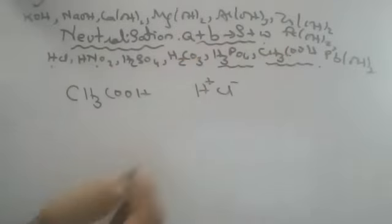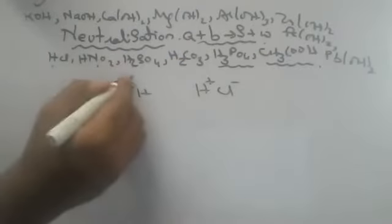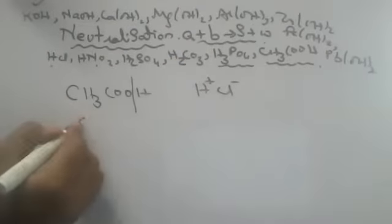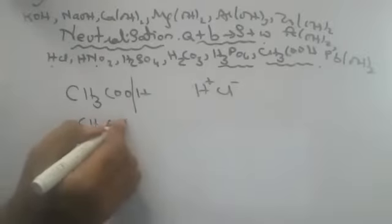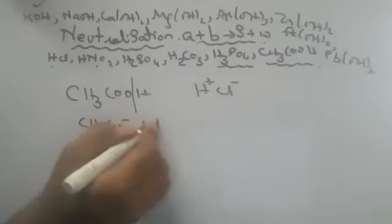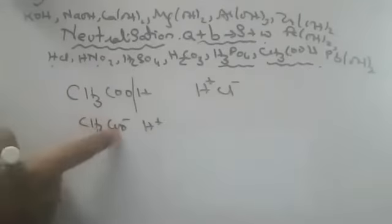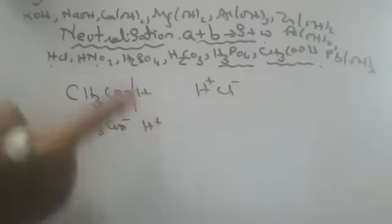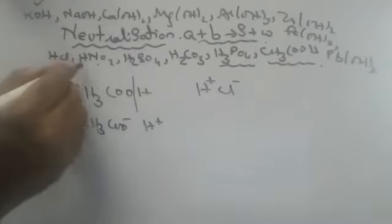Acetic acid is called an organic acid because carbon is present. Here, if you break it into ions, you will get CH₃COO minus first, and H plus second. The minus comes first and H plus comes second — that is the organic acid profile. All the others are mineral acids.